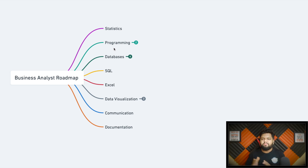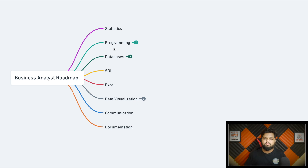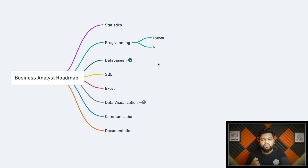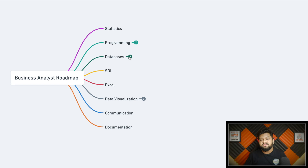Next is programming — though not typical data structures, algorithms, or high-level complex coding. The programming here is more towards data analysis. You need to know Python or R, because both languages provide amazing support for data exploration libraries like pandas, numpy, matplotlib, and sklearn in Python, with similar libraries available in R. The programming focus is specifically towards data exploration, not complex DSA.